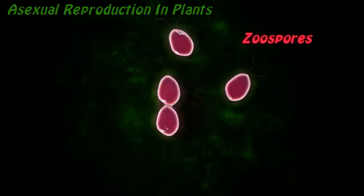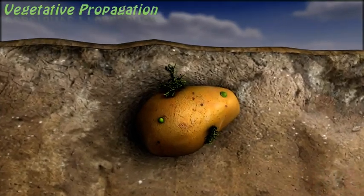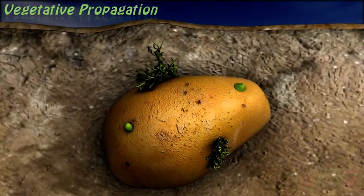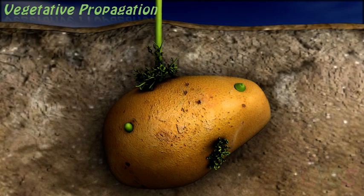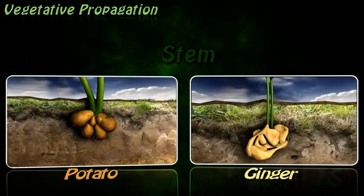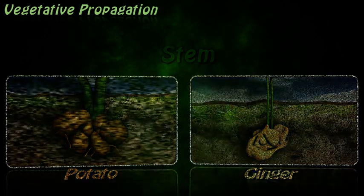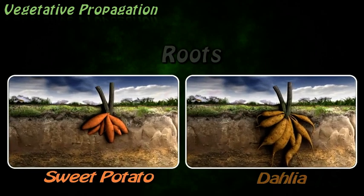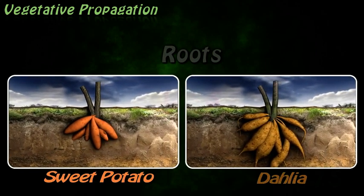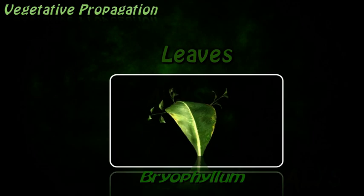The most common is growing plants by vegetative propagation. Vegetative parts of plants — like the stem, roots, and leaves — are capable of giving rise to new plants.